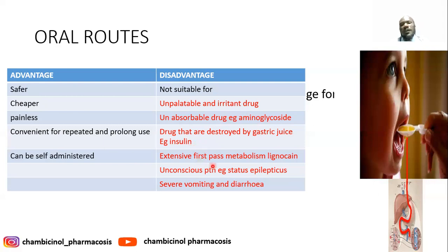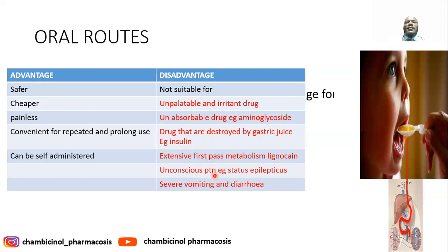Drugs destroyed by gastric juice — such as penicillin G and insulin — cannot be taken through the oral route as they will be degraded. Drugs undergoing extensive first-pass metabolism are also not suitable for oral administration. Unconscious patients such as status epilepticus patients, and patients with severe nausea and vomiting, cannot take drugs orally.